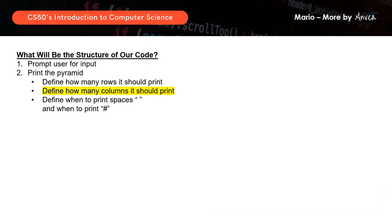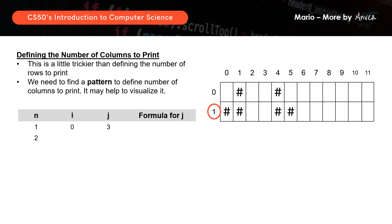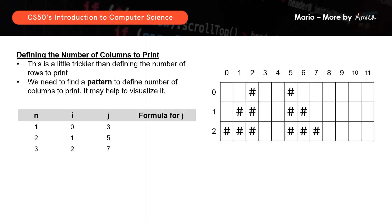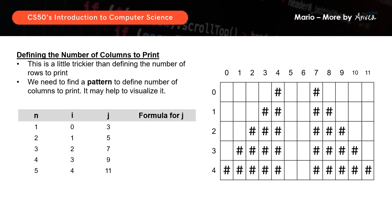Now we should move on to the next step, which is to define how many columns it should print. This is a bit trickier because we need to find a pattern which will give us a formula to print the number of correct columns each time. We're going to examine the pyramid to try to find a pattern to define the number of columns. If height is 1: i equals 0 and j prints up to 3. If height is 2: i prints up to 1 and j prints up to 5. For height 3: i up to 2, j up to 7. For height 4: i up to 3, j up to 9. And for height 5: i up to 4, j up to 11.